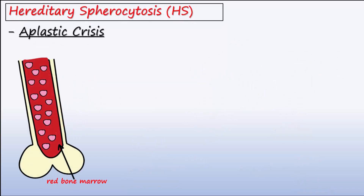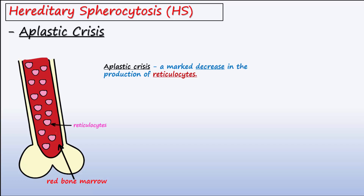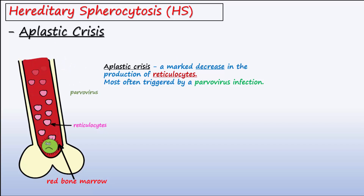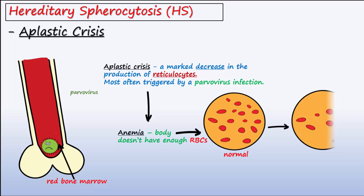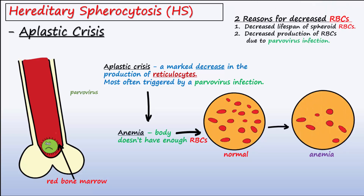One complication of HS is an aplastic crisis, which is a marked decrease in immature RBCs known as reticulocytes. This crisis most often comes about due to an individual with HS being infected by a parvovirus. Parvovirus infects and destroys red blood cell progenitors in the bone marrow. This causes a deficit in RBC production that may last for one to two weeks until the immune system controls the parvovirus infection. This halt in erythropoiesis leads to worsening of anemia and may necessitate the need for blood transfusions until the immune response kicks in and clears the infection.